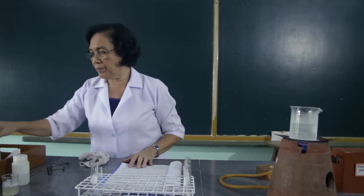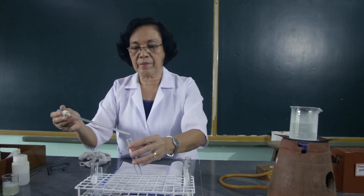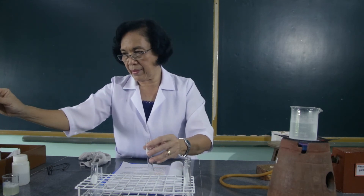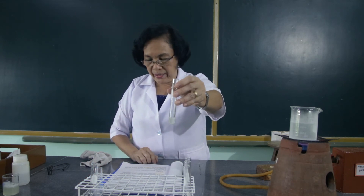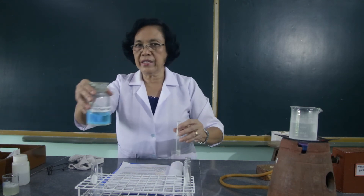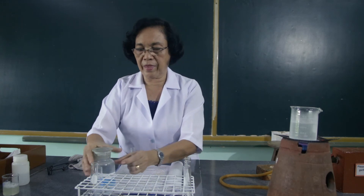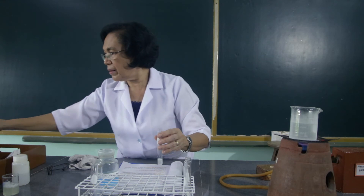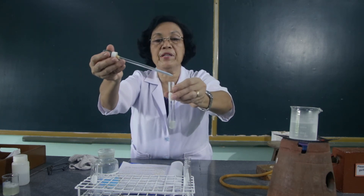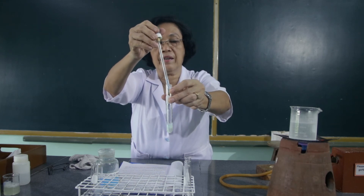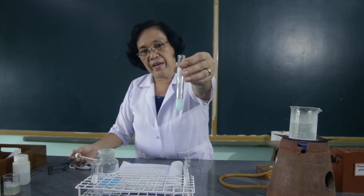The next precipitation reaction we are going to demonstrate is the precipitation of the egg albumin with the copper sulfate solution. We will use again 2 ml of the egg albumin. After this, we are going to add 1 ml of the cupric sulfate solution. I want you to observe what happens and whether a precipitate is formed.